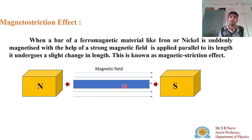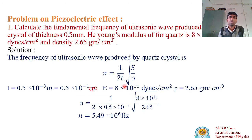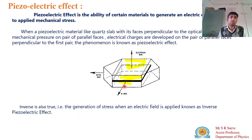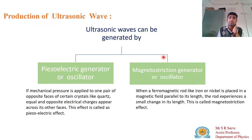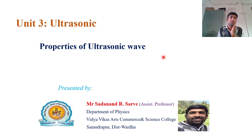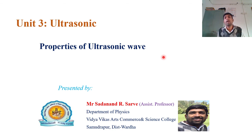So this is about the magnetostriction effect and the magnetostriction oscillator — when a magnetic field is applied, the ferromagnetic rod is magnetized and demagnetized, causing it to compress and expand. We have now covered the generation of ultrasonic waves by both the magnetostriction and piezoelectric oscillators, as well as properties of ultrasonic waves. In the next lecture, we will study how to detect ultrasonic waves and their applications.